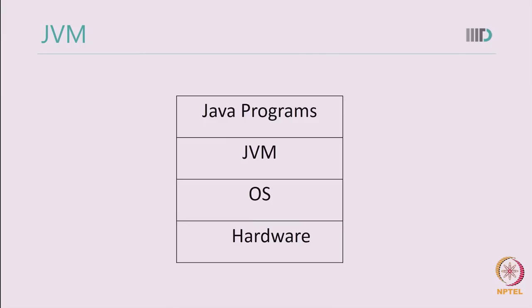This is a simple structure showing how a Java program lives on a given machine. You may have hardware, and on top of the hardware you may have different operating systems — for example, Linux, Windows, or Mac. There is a different JVM for each operating system, and then you have Java programs on top. As a developer, you write a Java program and the JVM hides all the complexities of the underlying OS and hardware from you. Your program will behave exactly the same from one platform to another. This is a major feature of Java and a key reason it was chosen as the programming language for the Android operating system.